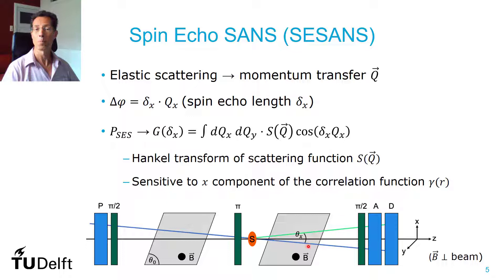But if you have elastic scattering, and then one component of it, in this case called the x component, that will give you a change in path length and that will give you a phase difference. You can express this as a length scale, the spin echo length, times the wave vector transfer in the same direction.